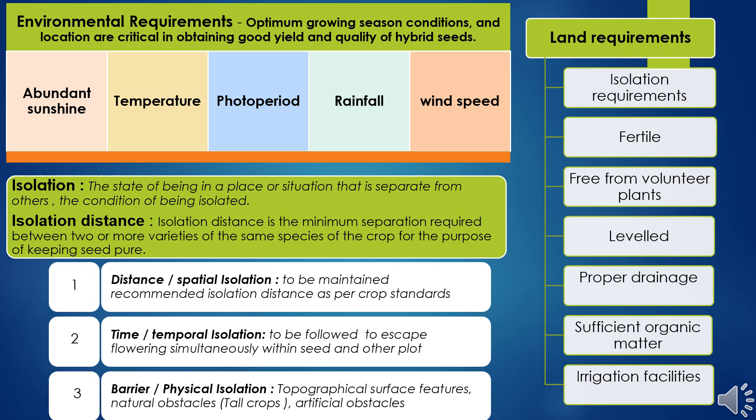Land requirements are very important. The selection should be related to isolation requirements, with no contamination chances from adjacent fields where the same species are grown, whether for commercial or seed production. The land should be fertile and free from volunteer plants — plants grown from the previous crop of the same species. The field should also be leveled with proper drainage, avoiding water stagnation, and should have sufficient organic matter and irrigation facilities.